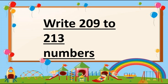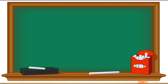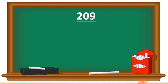Here is the heading: Write 209 to 213 numbers. This type of heading will come in your textbook or the test. So how should you write these numbers? Let's see. The first number we write is 209. This first digit 2 will stay as it is. We have to change only the last two digits. Here is 09, and after 09 the number 10 will come. So we write 210.